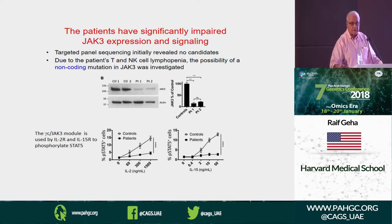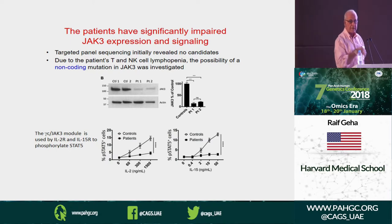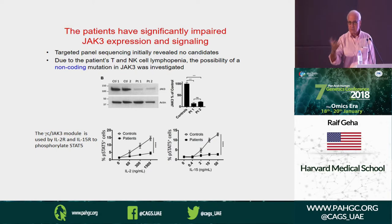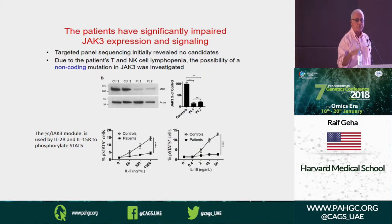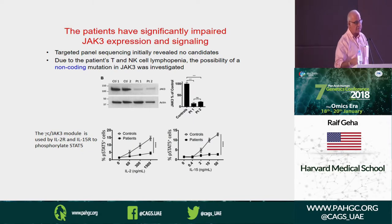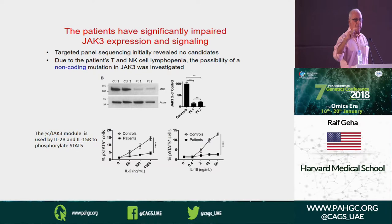We decided to ignore the result but asked for the raw data. While waiting, we did something very simple — a Western blot for JAK3. This girl had very little JAK3 protein — about 10% — and the same happened with the brother. We also did a functional assay showing that cytokines depending on JAK3 for signaling — IL-2, IL-7, IL-15, IL-4 — cannot transmit the signal, as measured by phospho-STAT5.